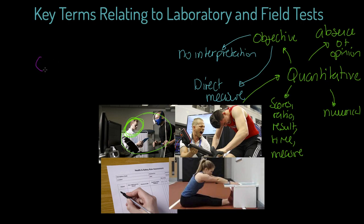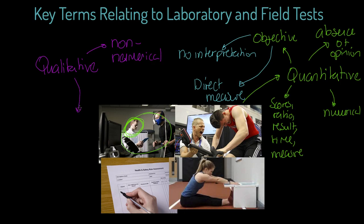We've covered quantitative and objective, so now let's go down the opposite road and look at qualitative data. What is qualitative data? First of all, it's typically non-numerical — there are exceptions but we won't get into those here. Secondly, it's what we describe as subjective, not objective. The key thing related to subjectivity is that it relates to opinions. It's not a fact, it's not a number — it's someone's judgment.